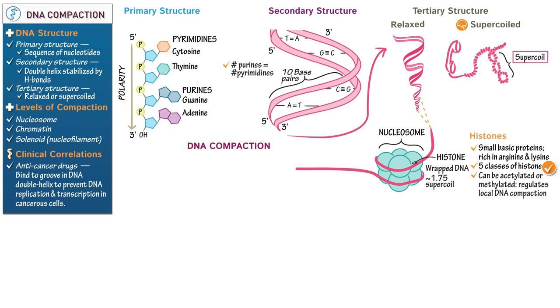Now indicate that a nucleosome comprises a histone octamer and the DNA that supercoils around it. Write that histones can be acetylated or methylated, which regulates the local compaction of DNA. Now draw another histone octamer and extend our DNA to wrap around it. Next label the DNA between the nucleosomes as a DNA spacer. Indicate that it's about 20 to 80 base pairs in length.